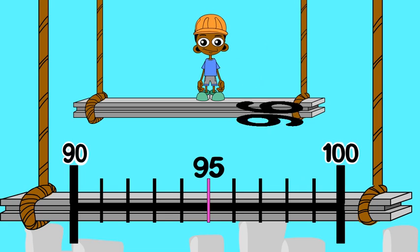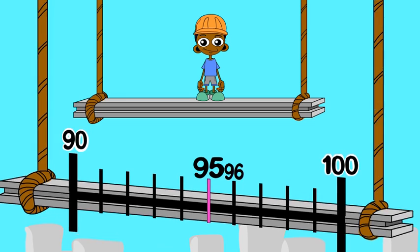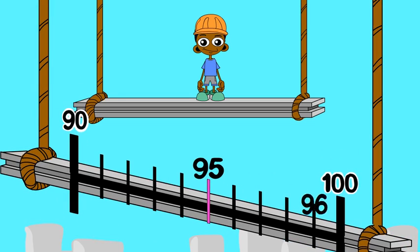Ninety-six is greater than ninety-five. So, to the nearest ten, ninety-six rounds up to one hundred.